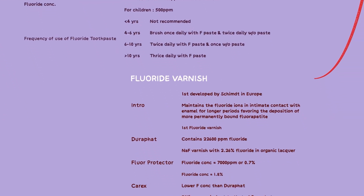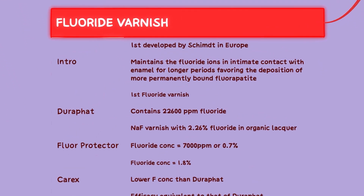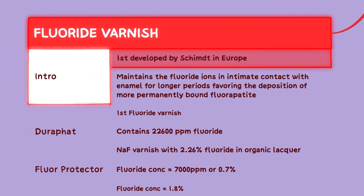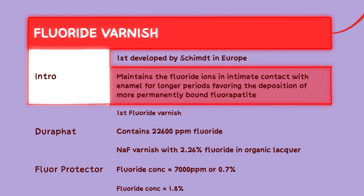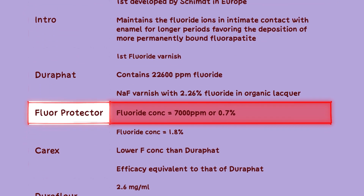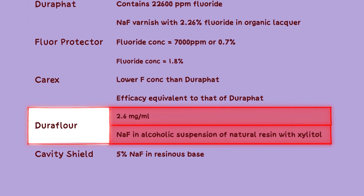Another method of topical application is fluoride varnish, first developed by Schmidt in Europe. It is designed to maintain fluoride ions in intimate contact with the enamel for longer periods, promoting the deposition of more permanently bound fluoroapatite — a form of enamel more resistant to dental caries. Key fluoride varnish products include Duraphat, Fluor Protector, Carex, Durafluor, and Cavity Shield.